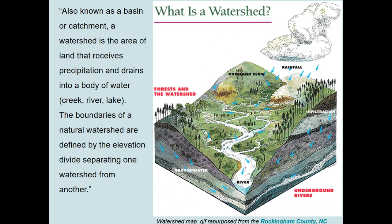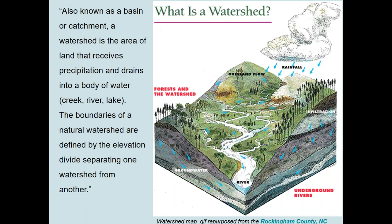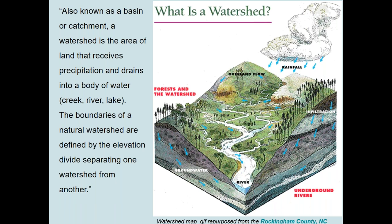Alberta's rivers eventually drain into three major ocean bodies: the Arctic Ocean via the Mackenzie River, Hudson's Bay via the Churchill and Nelson Rivers, and the Gulf of Mexico via the Missouri River.